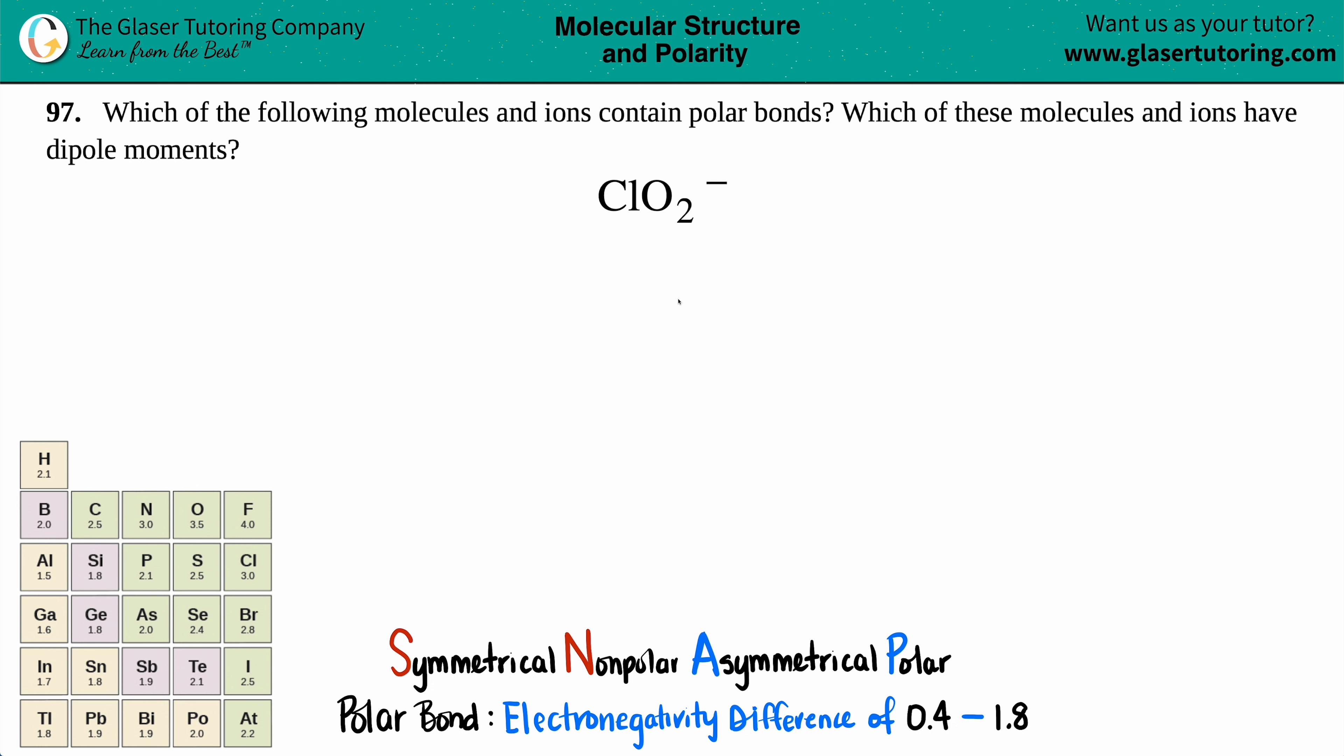Number 97. Which of the following molecules and ions contain polar bonds? And then which of these molecules and ions have dipole moments? So there's two questions here. We have to first find out whether this ClO2- ion, because there's a charge here, it's a minus, does this ion have polar bonds? And then does this ion have a dipole moment?